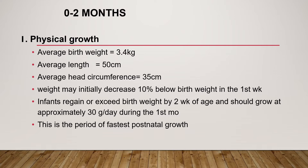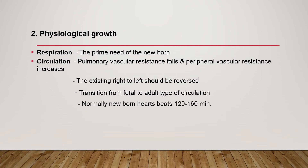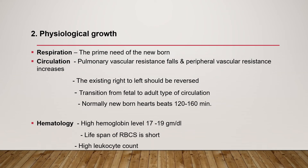Regarding physiological growth: starting from birth, the prime need of the newborn is breathing, so respiration begins, pulmonary vascular resistance falls, and peripheral vascular resistance increases. The existing right-to-left shunt reverses and transition from fetal to neonatal circulation occurs. Normal heart rate is 120 to 160 beats per minute during the first months. At birth, hemoglobin level is high, and the site of erythropoiesis is widespread during the intrauterine period, then changes to flat bones with bone marrow after delivery. Red blood cell life is short at birth and leukocyte count is high.